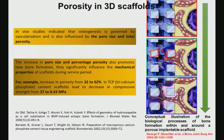However, one cannot arbitrarily change porosity. Increasing pore size and porosity promotes new bone formation but significantly reduces mechanical properties. For example, if porosity increases from 32% to 62% in tri-calcium phosphate, strength drops by an order of magnitude — from 37 MPa to 0.43 MPa.